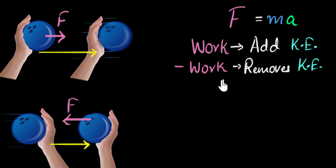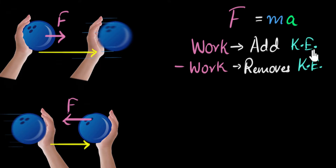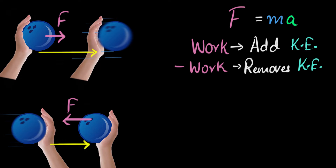This is, crudely speaking, what we call the work-energy theorem. It basically says when you do work, you either add or remove kinetic energy from the body. If you don't do work at all, then the kinetic energy will not change. We'll derive the mathematical version a little bit later, but before that let's look at some more examples.